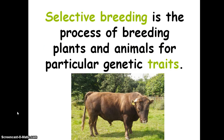Selective breeding is the process of breeding plants and animals for particular genetic traits. In this picture, cattle have been bred for beef production — this cow is very large, not bred to be a fast runner, but bred to produce a lot of meat for beef production.